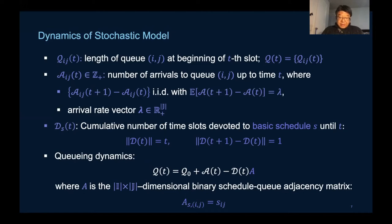The dynamics of the queueing system consists of the difference between the arrival and the control processes, and the adjacency matrix A provides the relationship between the schedule and the queues.